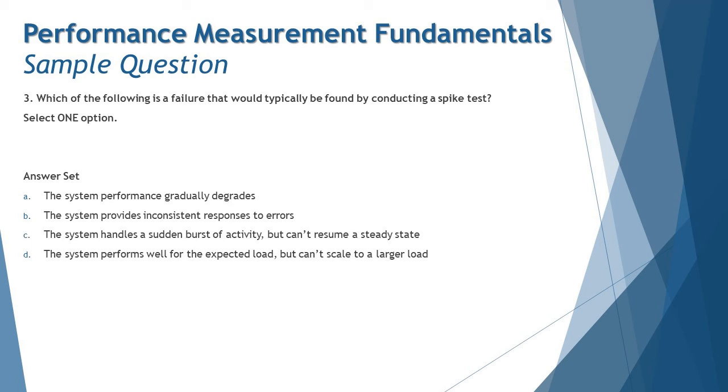Option A: the system performance gradually decreases. Spike is something which happens all of a sudden, so gradual decrease could not be correct. This is a result of the endurance test, where endurance testing involves continuous application of load, continuous adding of data to the system for a prolonged period. Performance will degrade gradually in endurance testing, not in spike.